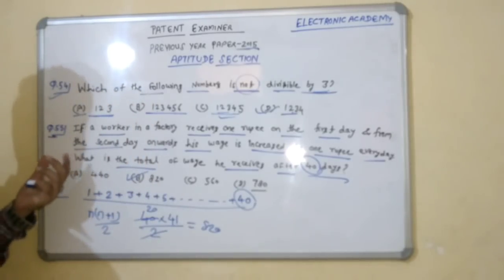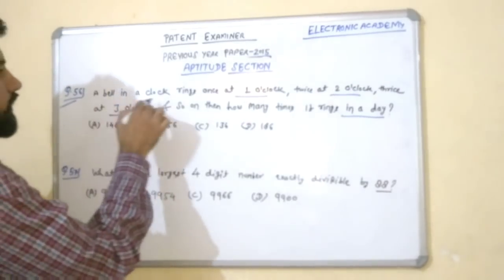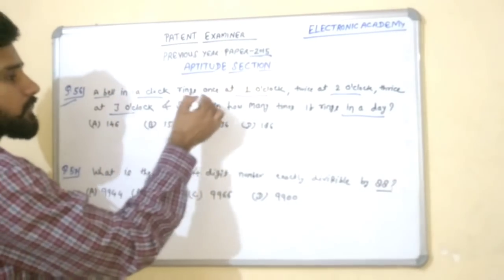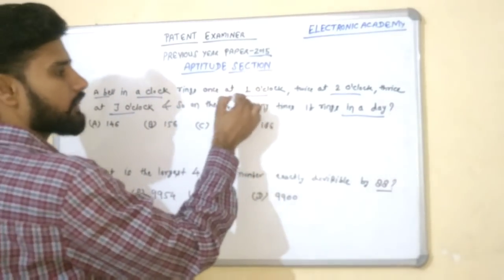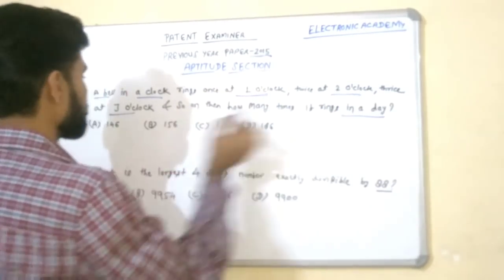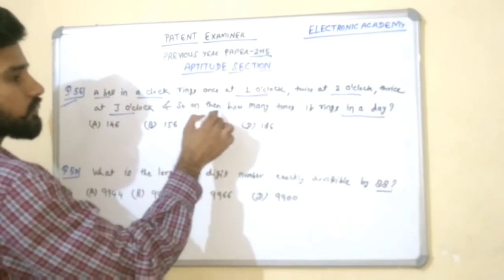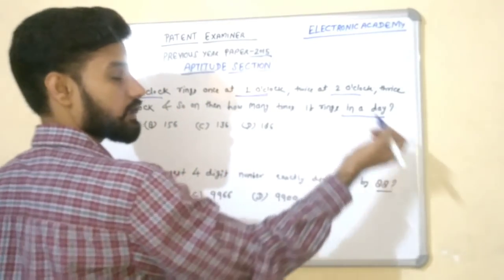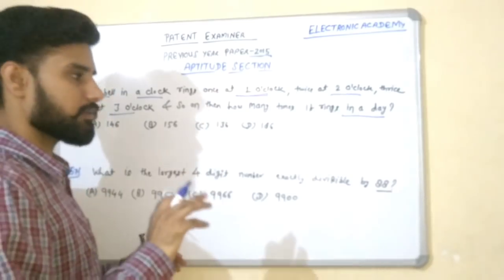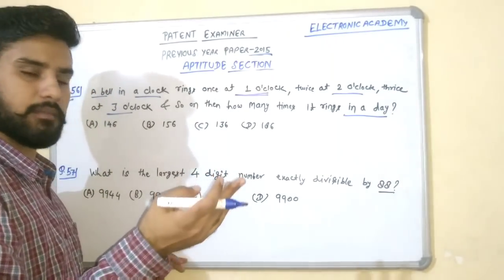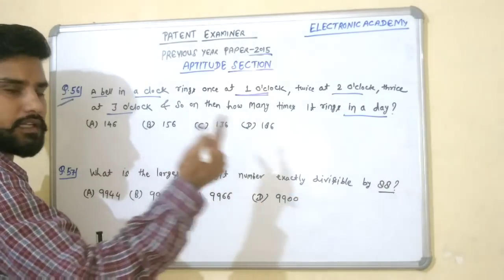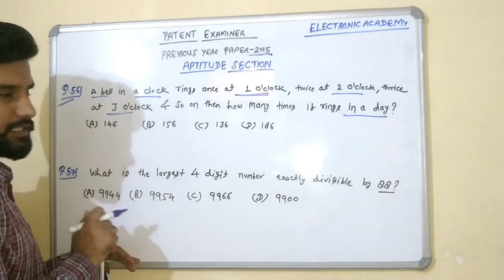Now the 56th question: a bell in a clock rings 1 time at 1 o'clock, twice at 2 o'clock, 3 times at 3 o'clock, and so on up to 12 times at 12 o'clock. How many times does it ring in a day? Since a clock repeats from 1 to 12 twice in a day, we need to find the total rings.